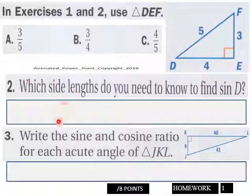Number two is here. Number three, write the sine and cosine ratio for each acute angle of triangle JKL. So write the sine and cosine for each acute angle, and I hope you know what those are. That's eight points here for page one.